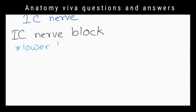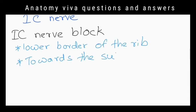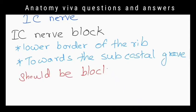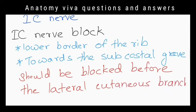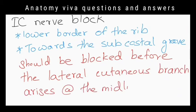Where do they inject intercostal nerve block? Near the lower border of the rib towards the subcostal groove. It should be blocked before the lateral cutaneous branch of the nerve arises at the midline.